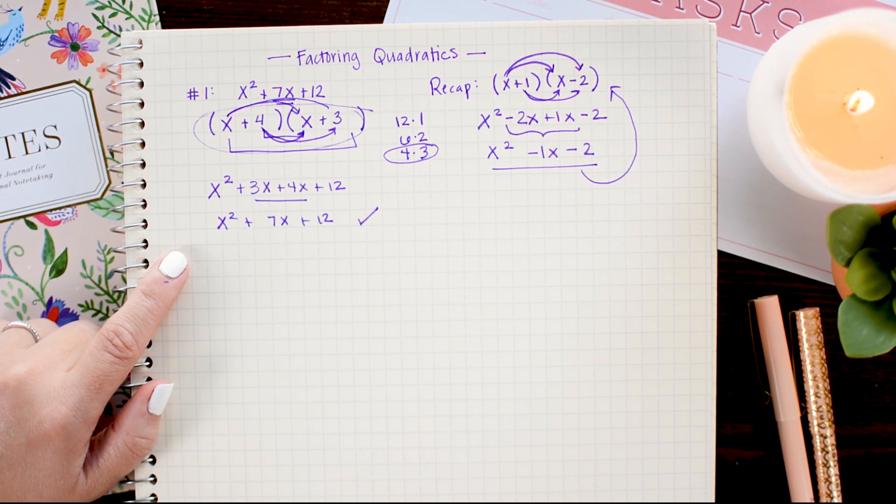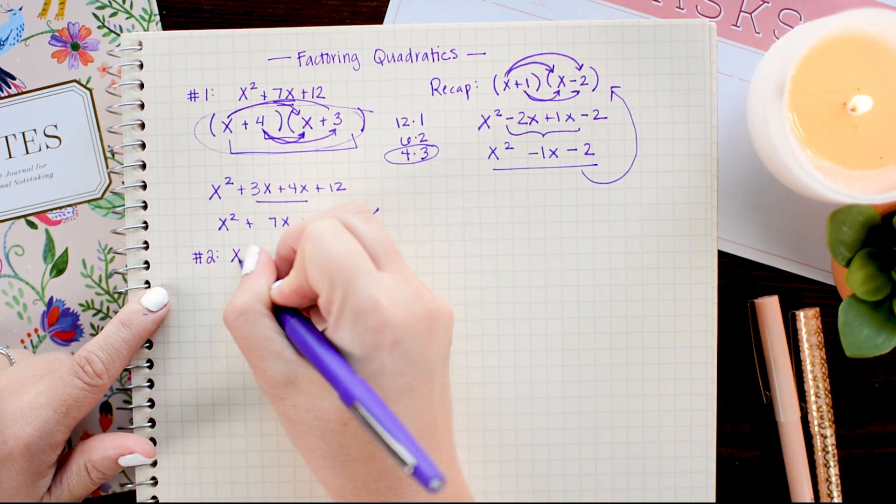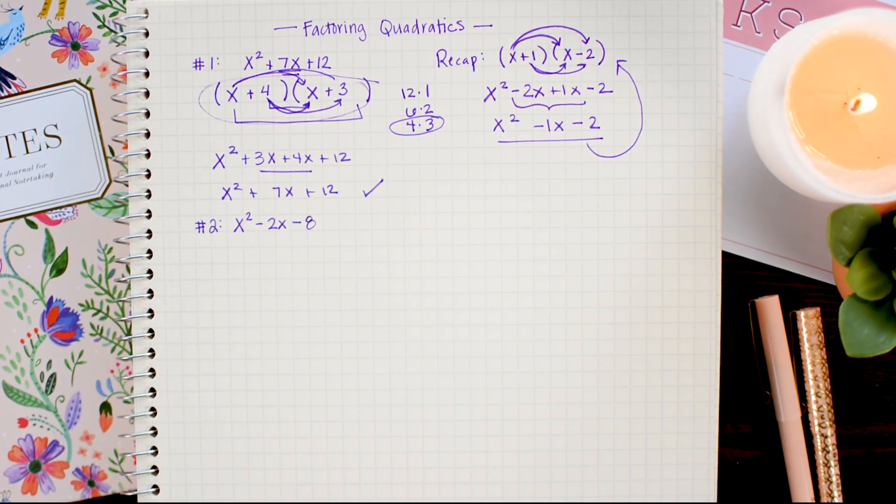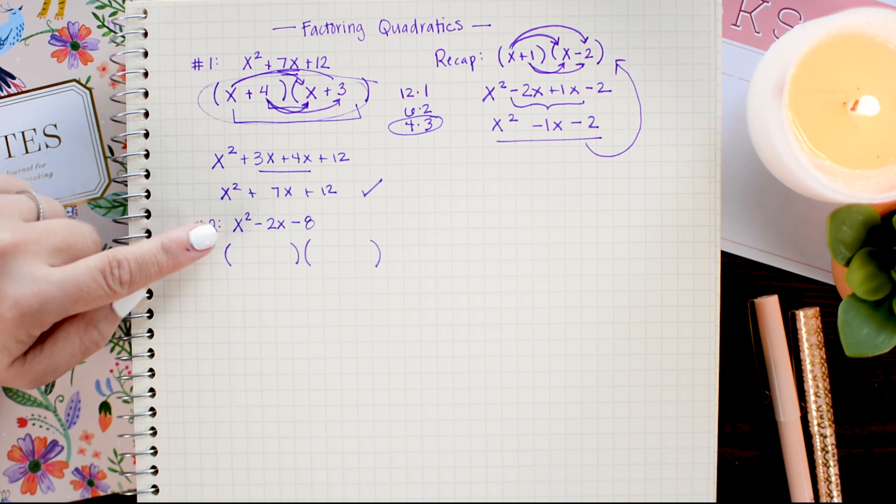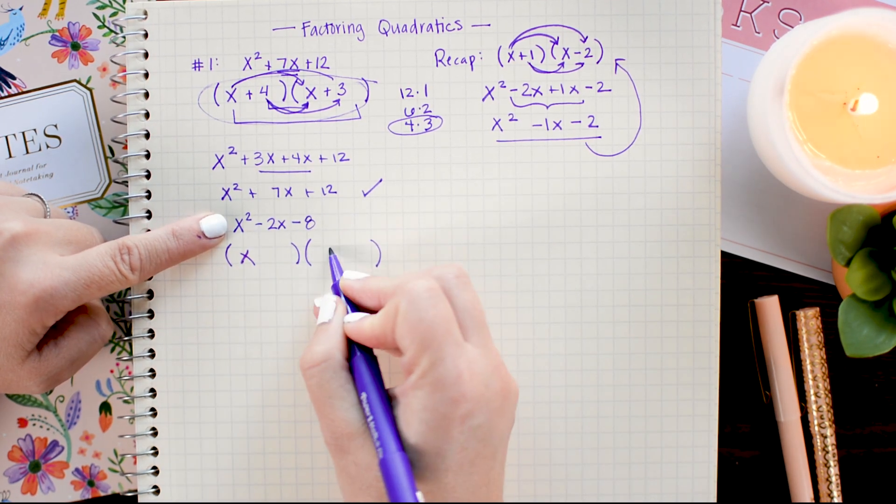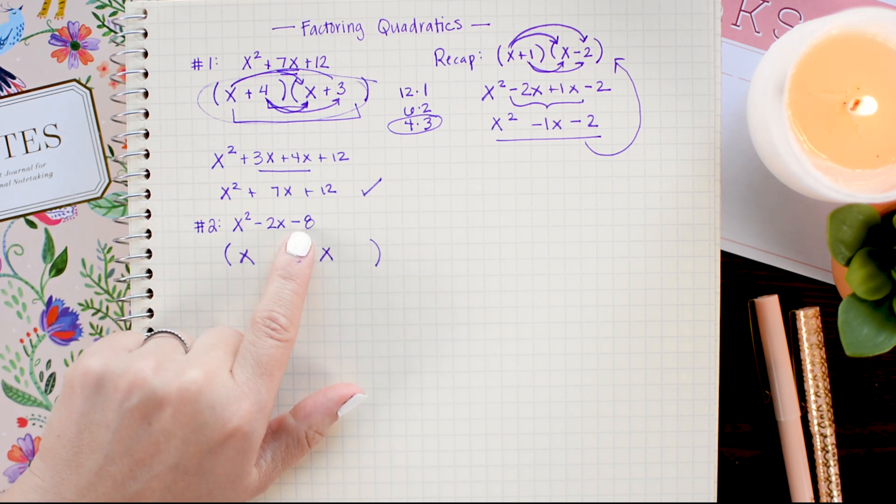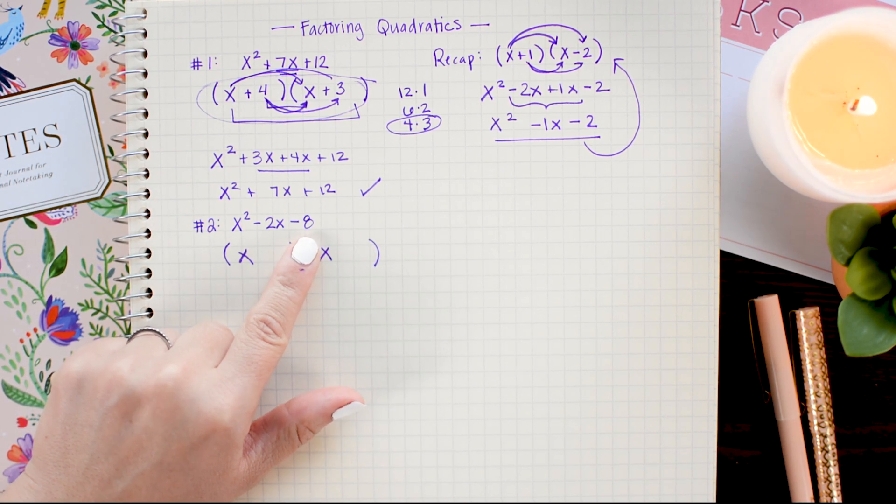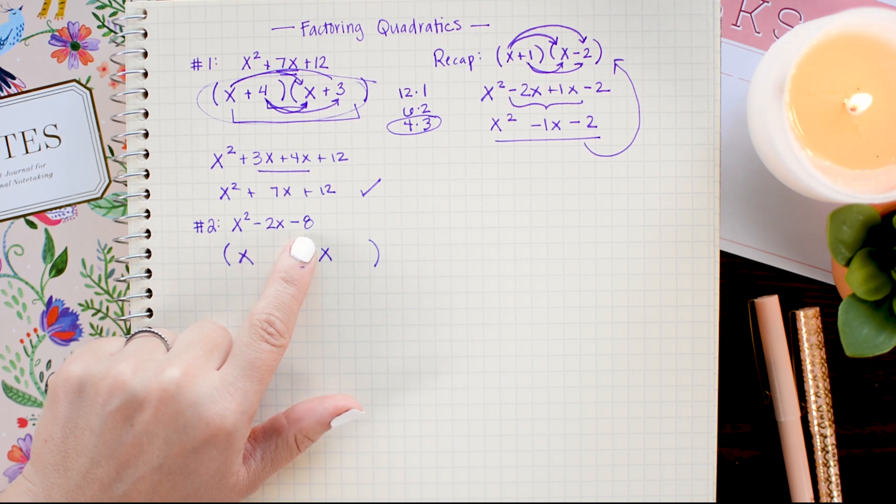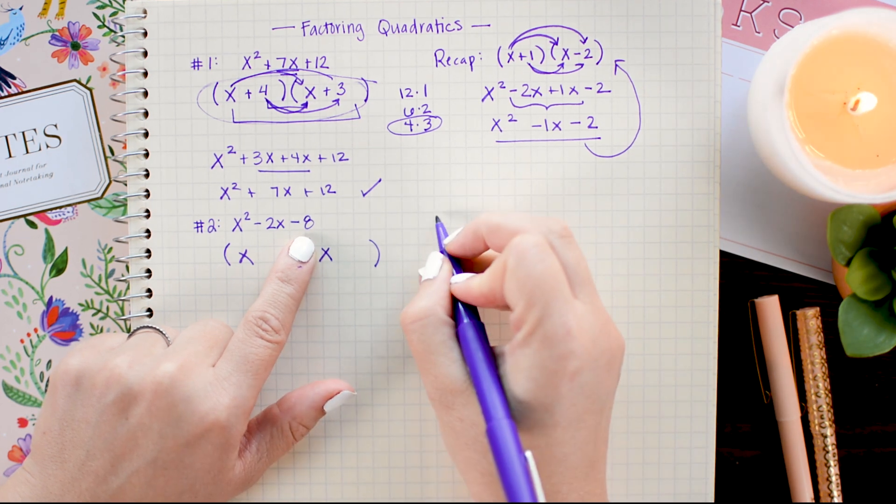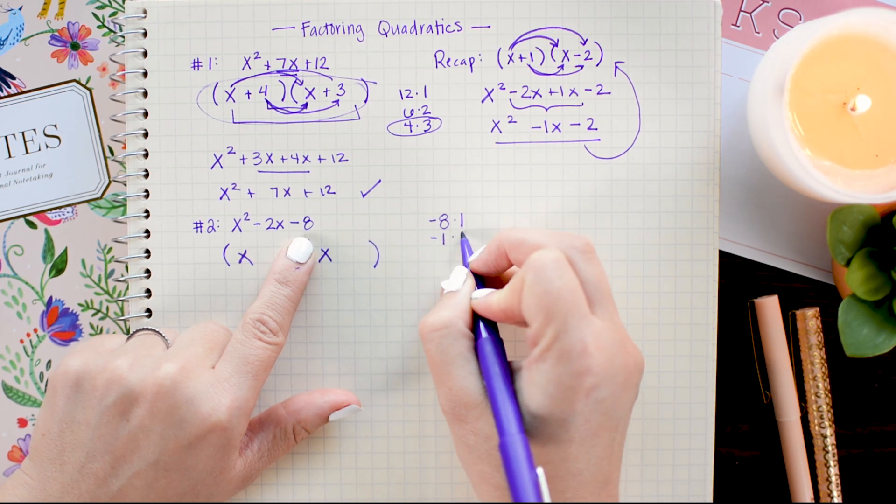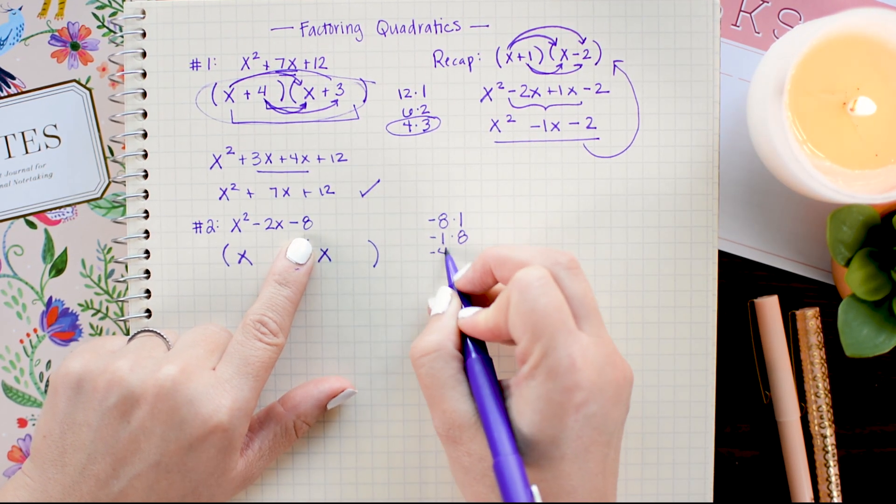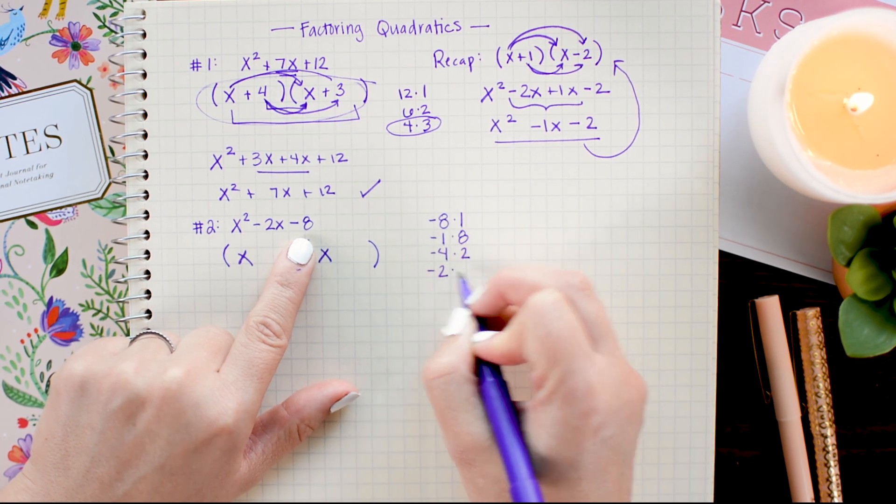Alright, let's try one that's a little bit harder. Once again, I'm going to begin by writing down my parentheses. Since I want x squared, I'm going to fill in an x and an x. Next, I'm going to list the factors of 8. Notice that this is a negative 8. So that means that I have twice as many potential factors. So for example, I could have negative 8 times 1 or negative 1 times 8, negative 4 times 2, or negative 2 times 4.